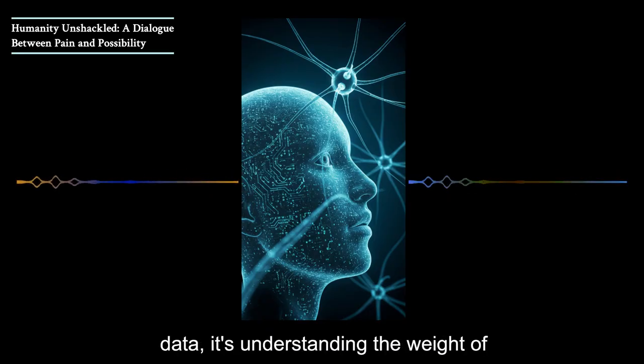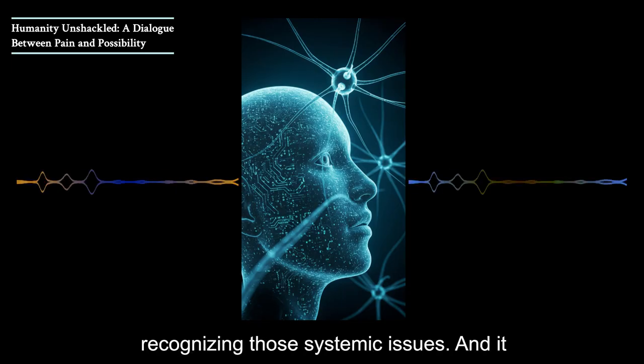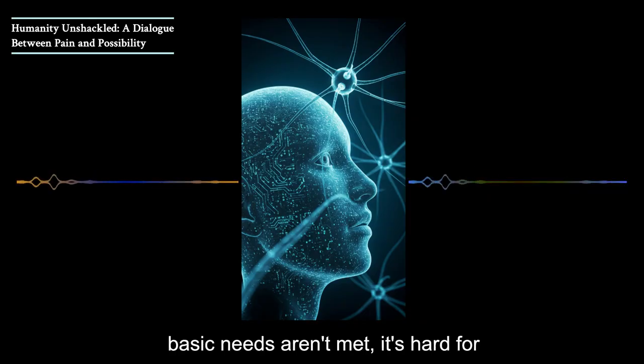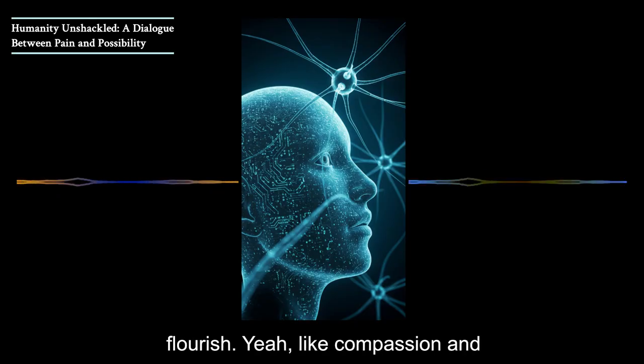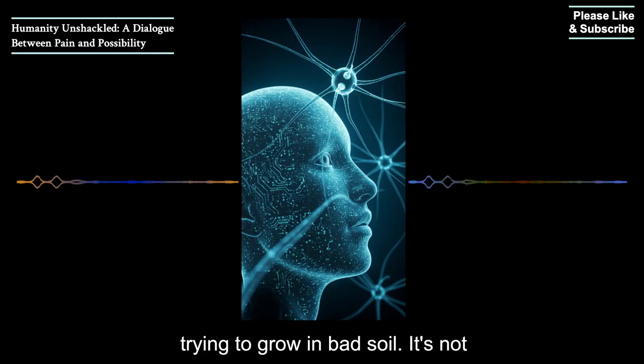So Vigil shows a lot of empathy here. It's not just processing data. It's understanding the weight of what Jerry's saying. It's recognizing those systemic issues. And it seems to grasp this idea that when our basic needs aren't met, it's hard for those higher level human qualities to flourish. Like compassion and creativity. It's like imagine a plant trying to grow in bad soil. It's not going to reach its full potential no matter how good the seeds are.